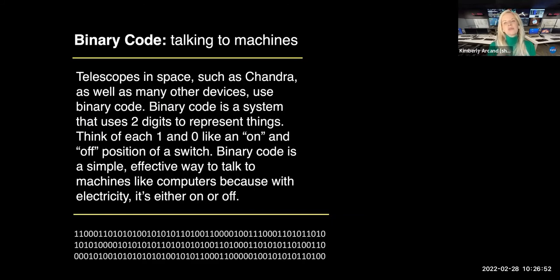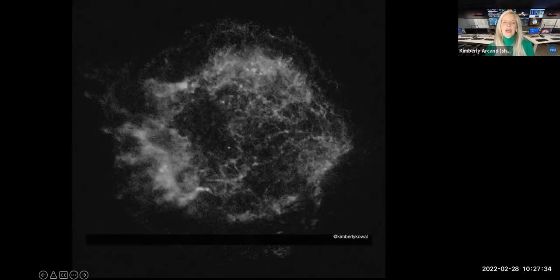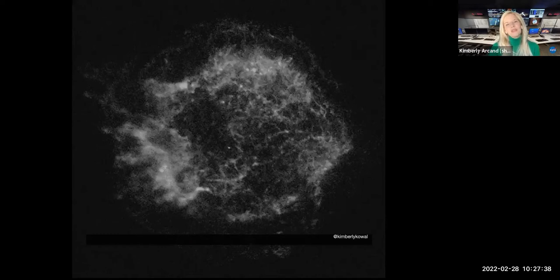So we're using lots of different kinds of coding and software to be able to unpack all that information. So we move from those ones and zeros that binary code, which is just essentially a system of talking to machines. So telescopes in space like Chandra, as well as many other kinds of electronic devices, use binary code as a way of communicating because those electronic devices are electronic. They've got those essential systems of going on or off, just like electricity. It functions in those two states on or off. So binary code is a great way to be able to talk to machines. So after we unpack that binary code, the data is then formulated into a table. The table tells us the time, the location and the energy of each little photon, each little pixel that we're going to make into an image, for example.